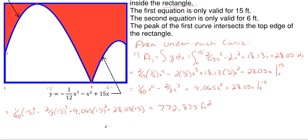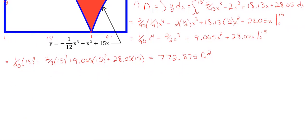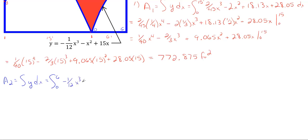Now we repeat that process for the second curve. Area two is the integration with respect to x of the second y equation, from zero to six feet. We call the start zero and the end six feet — it's easier than going 15 to 21 and dealing with the subtraction. The equation is: minus 1/12 x cubed minus x squared plus 15x dx.